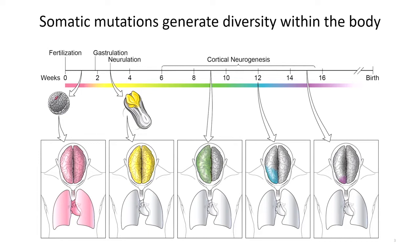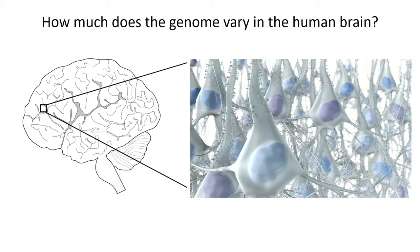Somatic mutations can also occur later in development and become restricted to a given organ like the brain, or subregions such as one hemisphere or a sub-hemispheric region. We've known about these clonal somatic mutations because they can sometimes be causal in specific human diseases — for example, hemimegalencephaly, where one side of the brain overgrows relative to its normal size, caused in some cases by gain-of-function mutations in genes driving cell growth restricted to that hemisphere. But aside from these examples, up until recently it's been a total mystery how much the genome varies from cell to cell in the human brain.